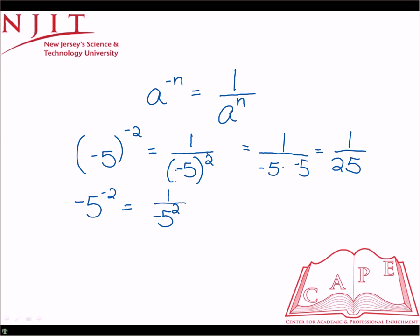Now because in this case there's no parentheses present around the negative 5, the negative is completely separate from the exponent and should be completely pulled out of the fraction so there's no confusion. So this can be rewritten as negative 1 over 5 squared, which is negative 1 over 5 times 5, which is equal to negative 1 over 25.